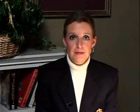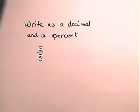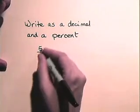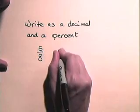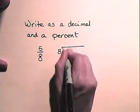Now let's look at an example of writing a fraction as a percent. Let's write five-eighths as a percent. In order to write five-eighths as a percent, we're first going to have to write the fraction as a decimal and then change it to a percent. To write it as a decimal, we will divide eight into five.